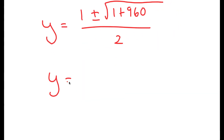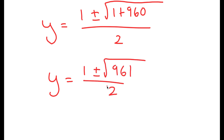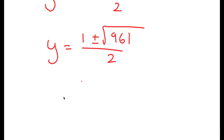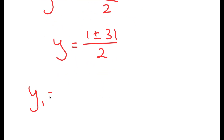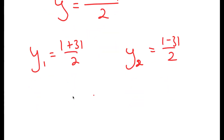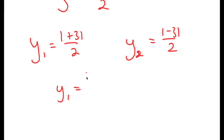This simplifies to 1 plus or minus the square root of 1 plus 960 over 2, which gives y equals 1 plus or minus the square root of 961 over 2. The square root of 961 is 31, so I get y equals 1 plus or minus 31 over 2. My two solutions are y equals 1 plus 31 over 2, which is 17, and y equals 1 minus 31 over 2, which is negative 15.